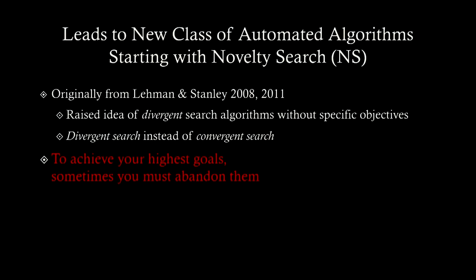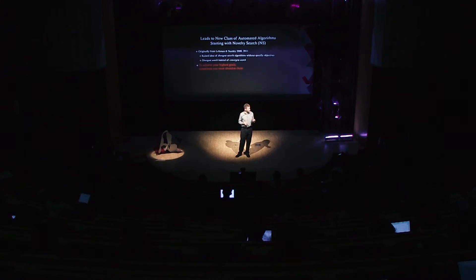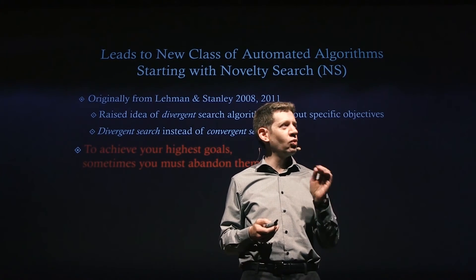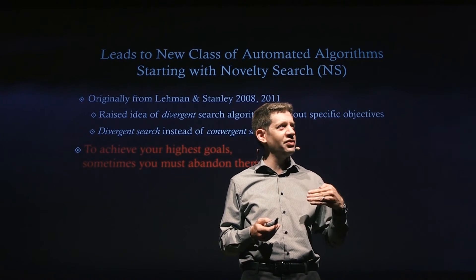Some people think when they hear this that it might be random — this algorithm is doing things without any particular end goal. But it's actually not random. It's no more random than evolution on Earth or Picbreeder. The concept of novelty is not random — novelty is an information-rich concept, which means I'm comparing where I'm going to where I've been in the past, and that takes a lot of information. You don't get random results.